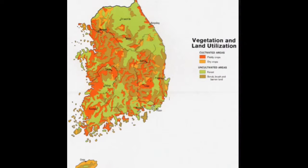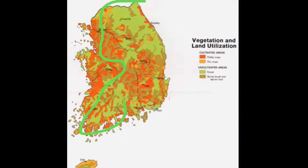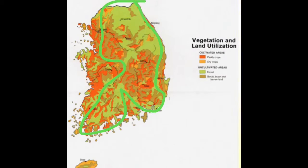In South Korea, you will mainly see a deciduous, coniferous, mixed forest. Deciduous are like oak and elm trees, and coniferous are like pine trees. In the photo, you can see all the green and brown area mixed with the orange. That is all trees, and the orange is just like cities.